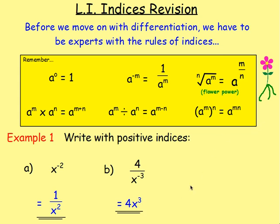From there we looked at the rules of indices — a recap from National 5. For the rule with fractional indices, I use the 'flower power' mnemonic: if you've got the nth root of a to the power of m, think about a flower. At the bottom of a flower you've got the roots, so the nth root — n goes at the bottom. And 'power' rhymes with 'flower', which is on top, so m goes on top.